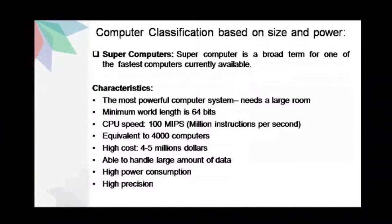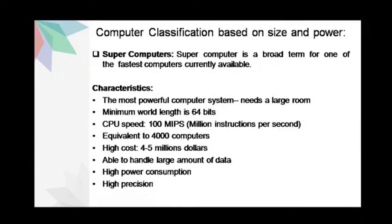The fourth category of computer classification based on size and power are the supercomputers. A supercomputer is basically a broad term for one of the fastest computers currently available. Supercomputers are the most powerful computer systems and usually require a large room. The minimum word length is 64 bits and CPU speed is around 100 million instructions per second. Supercomputers are usually equivalent to 400 general computers and they have a high cost. They are able to handle a large amount of data but require high power consumption. Also, the precision is very high for supercomputers.